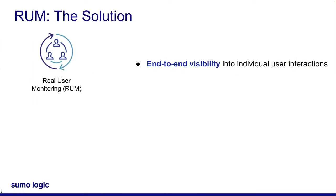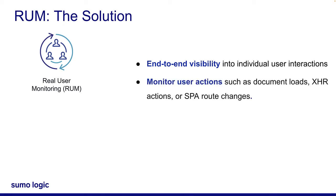RUM provides end-to-end visibility into each individual user interaction to quickly understand each user's overall experience. You can monitor your website's most important user actions, including document loads, XHR actions, and SPA route changes.